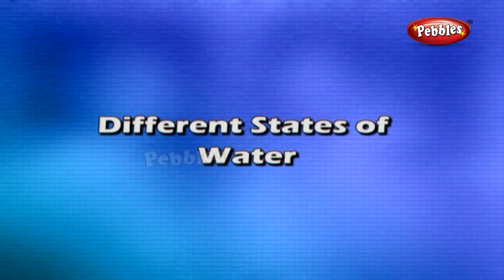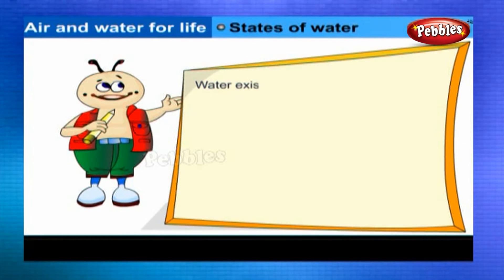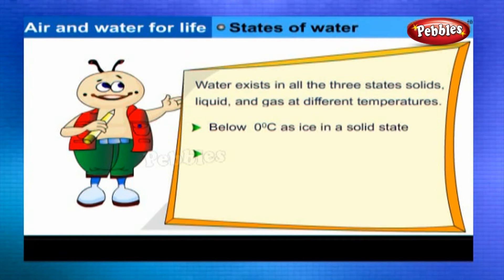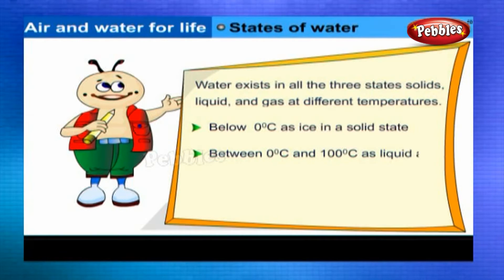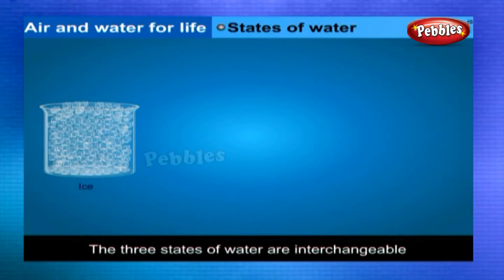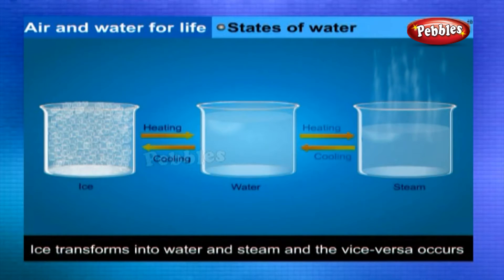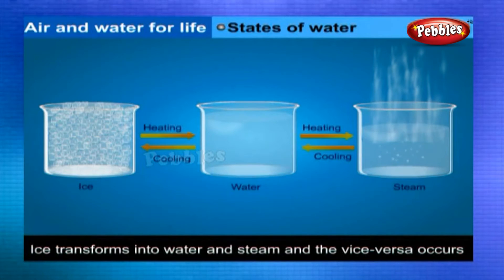Different states of water: Water exists in all three states — solid, liquid, and gas — at different temperatures. Below 0°C it exists as ice (solid state); between 0°C and 100°C as liquid; and above 100°C as steam (gaseous state). The three states of water are interchangeable. Water (solid) on heating changes to water (liquid), and water (liquid) on heating changes to steam (gas).